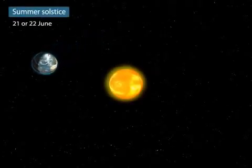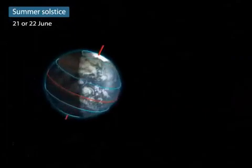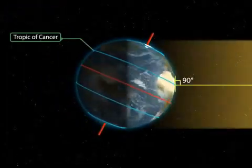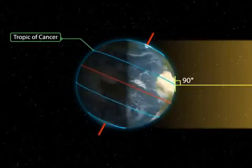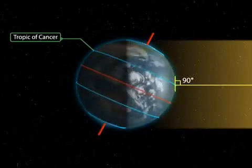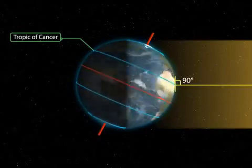Summer solstice. On the 21st or 22nd of June, the overhead sun is over the Tropic of Cancer. It receives the largest amount of solar radiation.